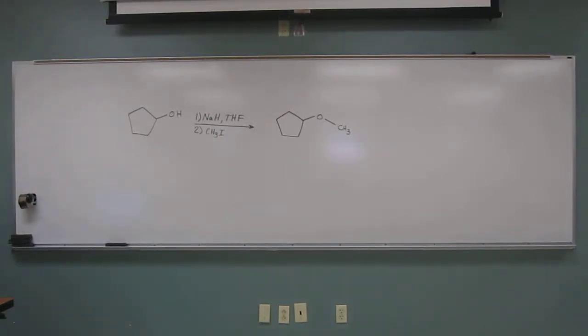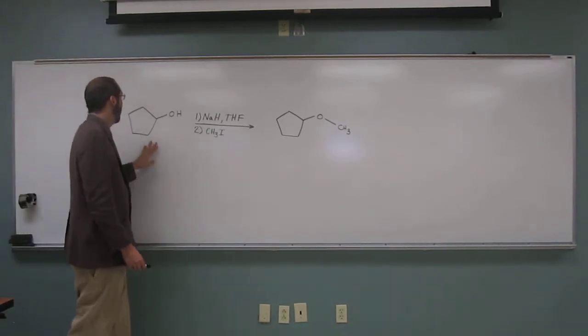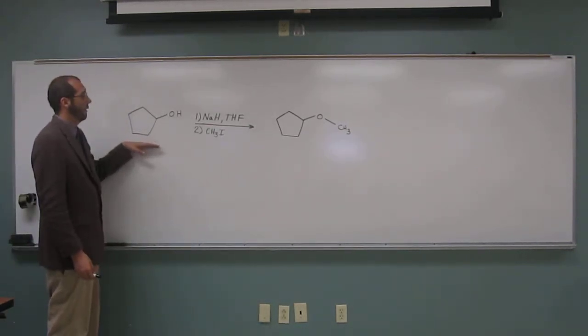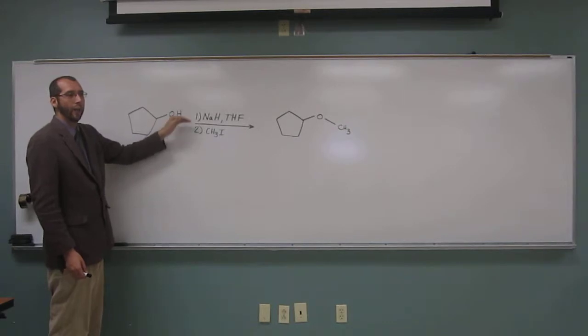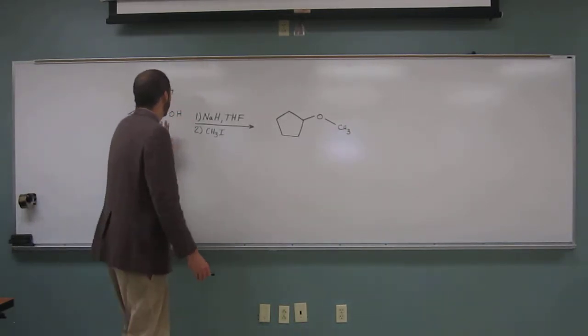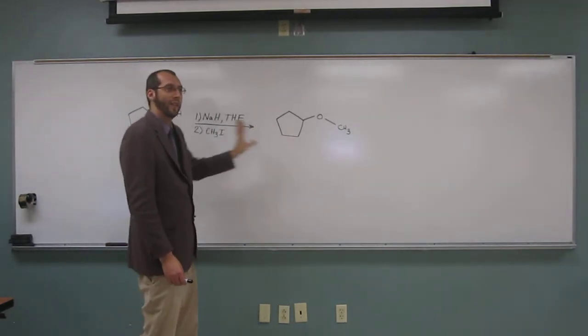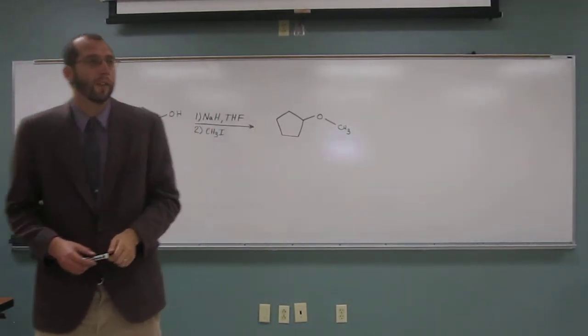So here you can see a reaction sequence. Notice we have cyclopentanol and we have a two-step reaction sequence. This two-step reaction sequence going from an alcohol to an ether. What is the name of this sequence called or this reaction called?